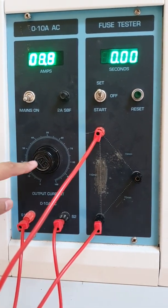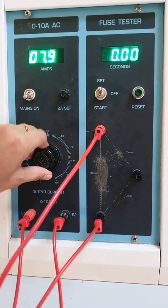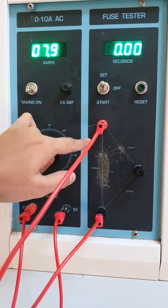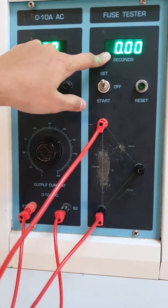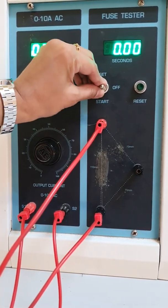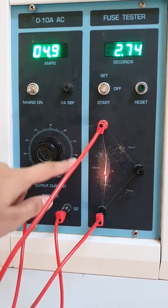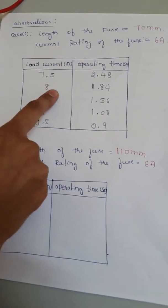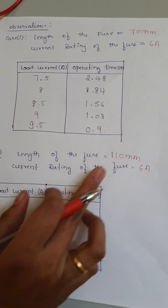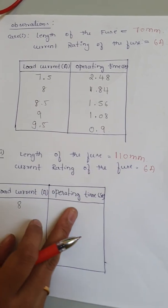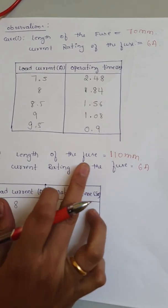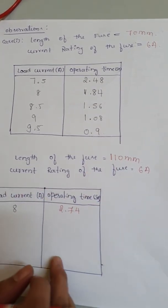The procedure is the same. The operating current is set to 8 amperes and the toggle switch is brought from set to start. Since the length of the fuse is more, the time taken to melt is also more. For case 1 at 8 amperes, the melting time was 1.84 seconds, but for a fuse length of 110 mm at the same current of 8 amperes, the time taken to melt is 2.74 seconds.